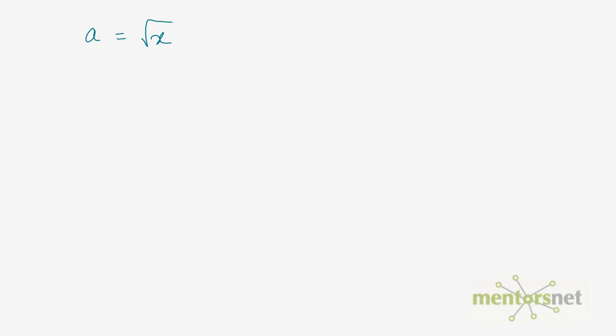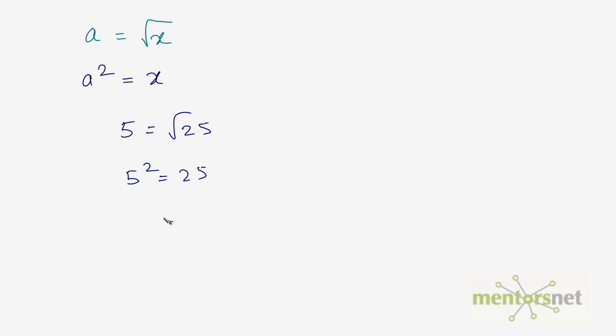Lastly, if you have a equals root of x, then you can always write a squared is equal to x. You can either take the square of both sides of the equals to, or you can take the under root of both sides. So in this case, if I have 5 equals root 25, I can write 5 squared is equal to 25 — and of course 25 is equal to 25. So this is how you do square roots.